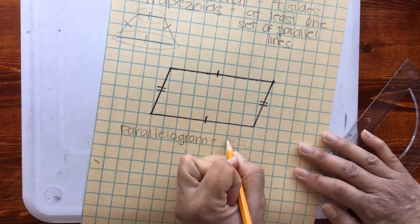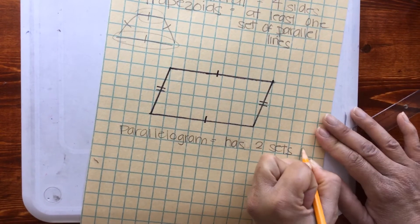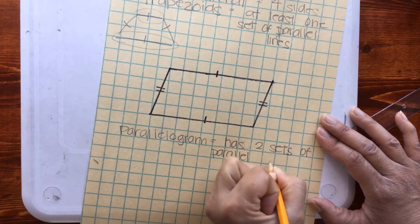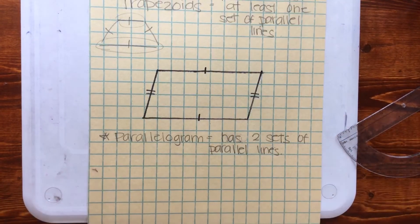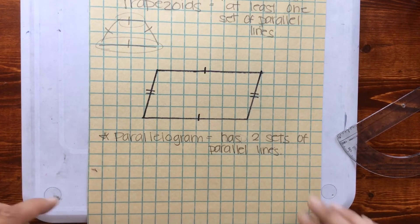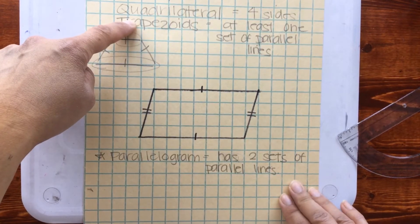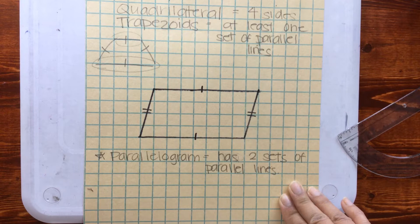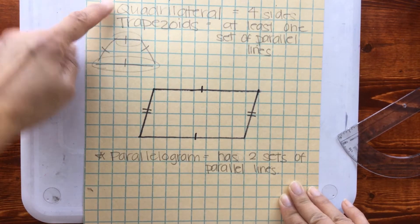A parallelogram has two sets of parallel lines. A parallelogram is a trapezoid because it has at least one pair of parallel lines. A parallelogram is a quadrilateral because it has four sides.